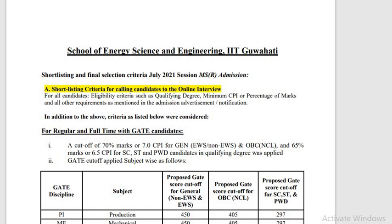Now coming to the eligibility criteria: your BTech degree should be 70% or 7 CPI; OBC-NCL is 65%; SC/ST have their respective cutoffs. At least qualify GATE — everyone can apply if your GATE score is just qualified. But before applying, you should know the shortlisting criteria.